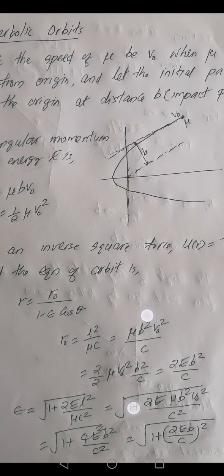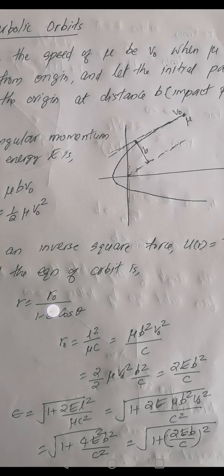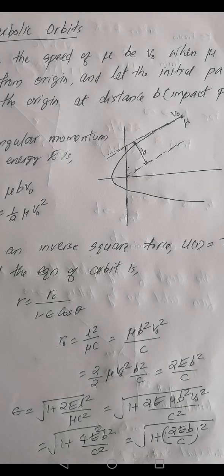Similarly, the eccentricity epsilon is given by the square root of (1 plus 2E*L²/(mu*c²)). Substituting L equals mu*b*v0, this equals the square root of (1 plus 2E*mu*b²*v0²/c²). Multiplying and dividing by 2 and rearranging half*mu*v0² as E, the eccentricity becomes the square root of (1 plus (2E*b/c)²).